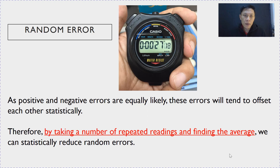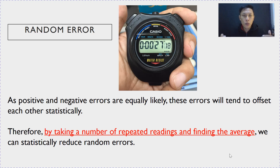Because random errors have an equal chance of being positive and negative, if you take a lot of readings, these readings tend to offset each other statistically. So, one way to reduce random error is by taking a number of repeated readings and finding the average.